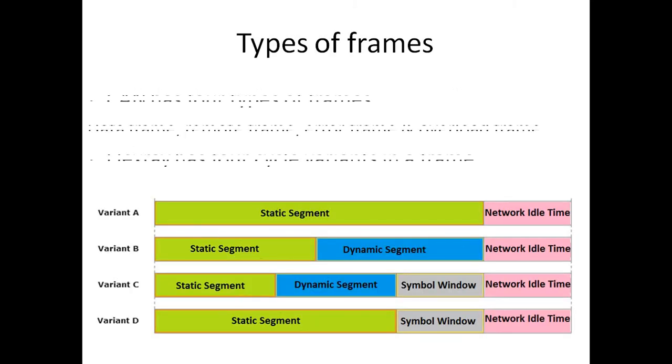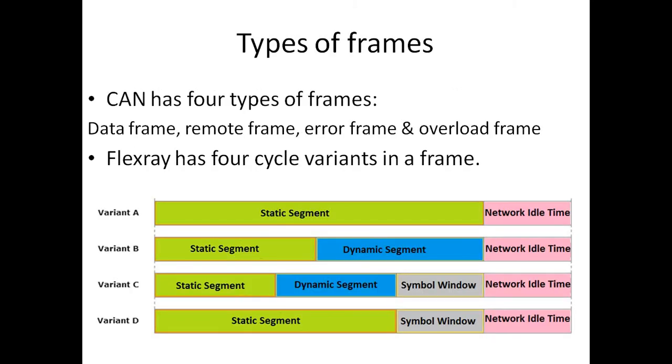Look at the types of frames. CAN has four types of frame formats: data frame, remote frame, error frame, and overload frame. Data frame is used to send data, whereas remote frame is used to request data. Error frame is used to indicate the error on the bus. And overload frame is used for the slower nodes.